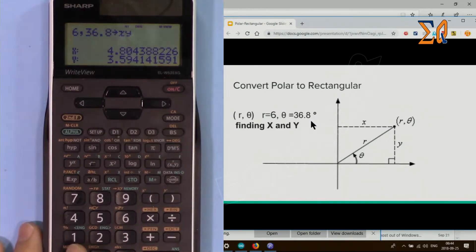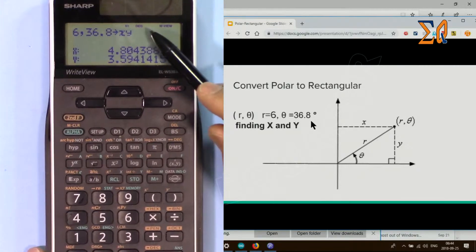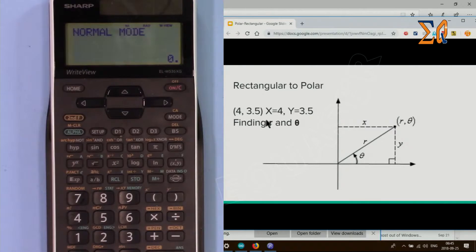Keep in mind that because this value is in degrees, you must see DEG or degree here. If you don't see it, you have to change it. Now we have X is 4 and Y is 3.5, which is the same as if we write 4 comma 3.5.